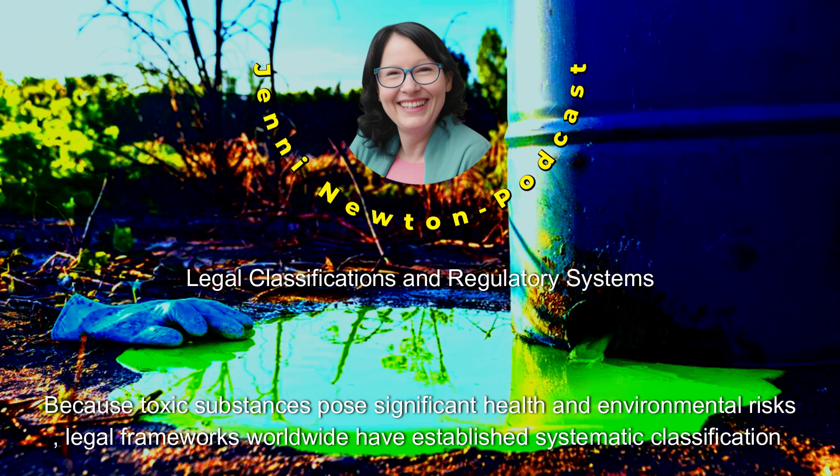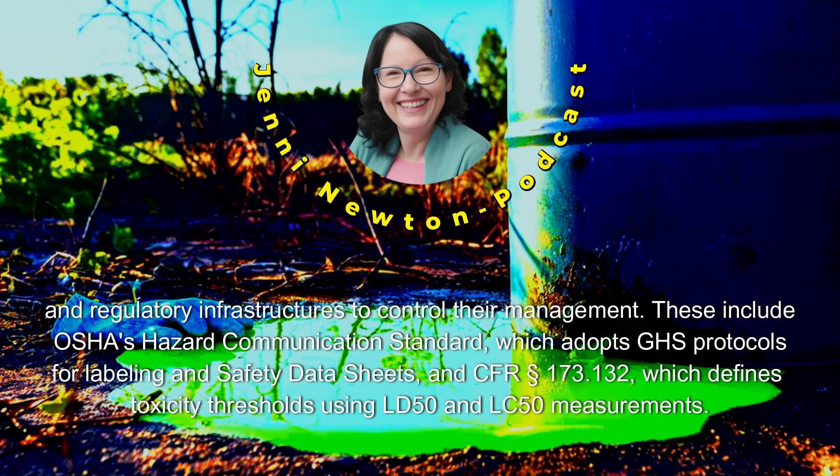Legal Classifications and Regulatory Systems: Because toxic substances pose significant health and environmental risks, legal frameworks worldwide have established systematic classification and regulatory infrastructures to control their management. These include OSHA's Hazard Communication Standard, which adopts GHS protocols for labeling and safety data sheets, and CFR Section 173.132, which defines toxicity thresholds using LD50 and LC50 measurements.